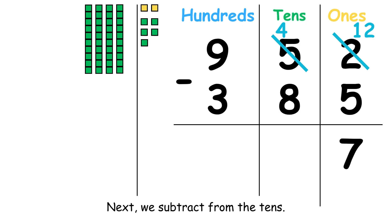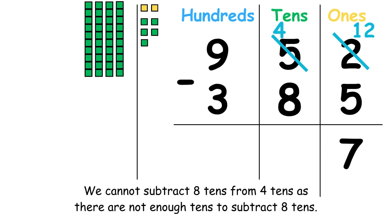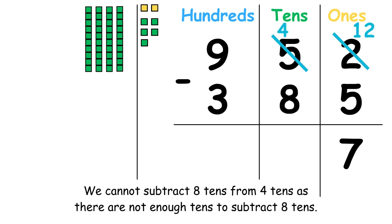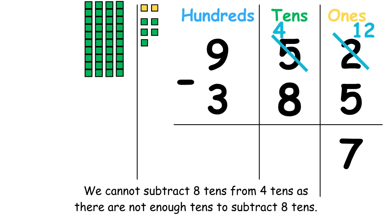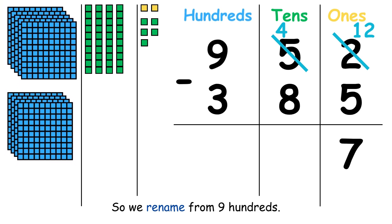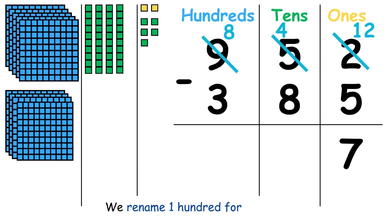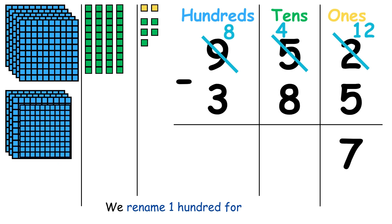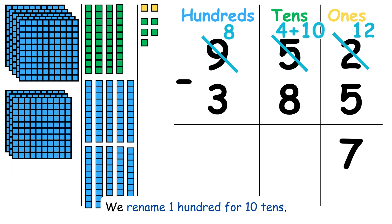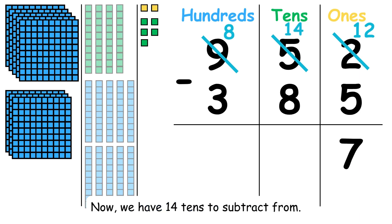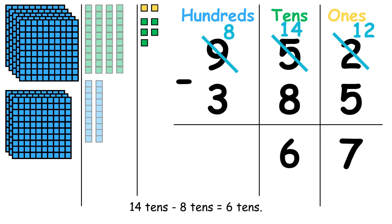Next, we subtract from the tens. We cannot subtract 8 tens from 4 tens, as there are not enough tens to subtract 8 tens. So we rename from 9 hundreds. We rename 1 hundred for 10 tens. Now, we have 14 tens to subtract from. 14 tens minus 8 tens equals 6 tens.